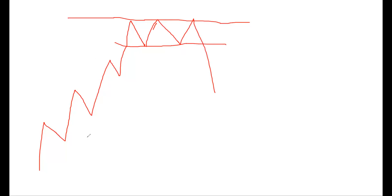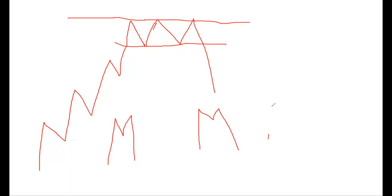Now I'll tell you the basics of the formation of the double top pattern. The perfect double top pattern is nothing but the letter M. There are other ways of it forming as well — it may form like this, or like this, or like this. There are various variations of how it can appear on the chart.